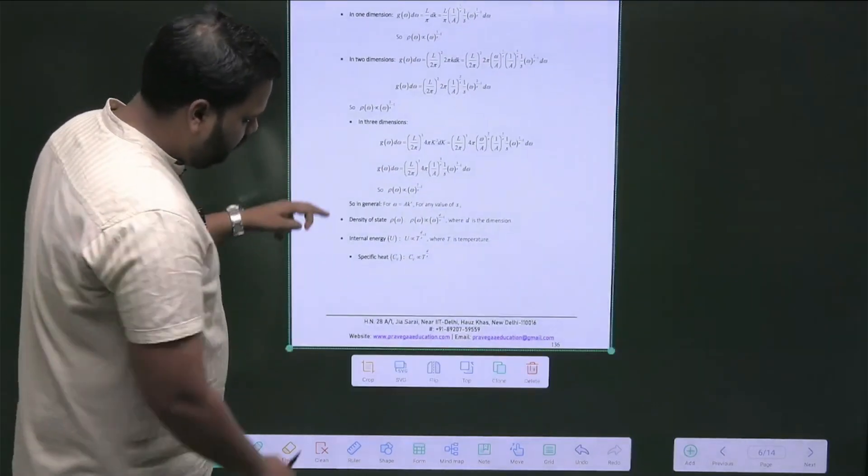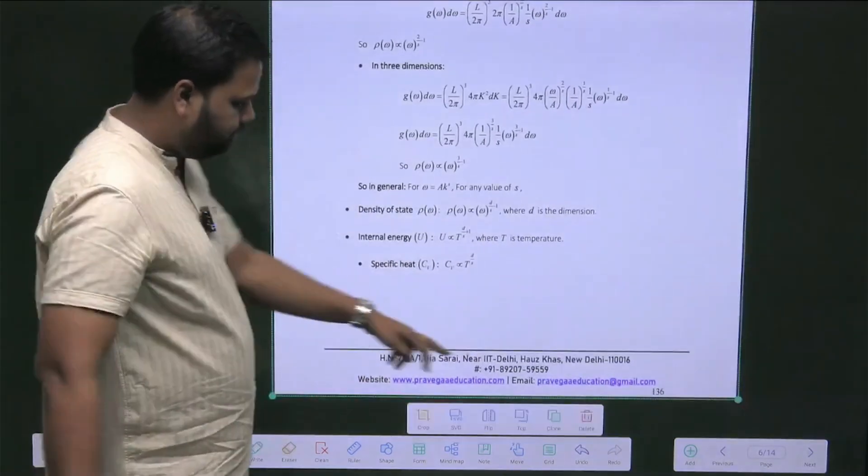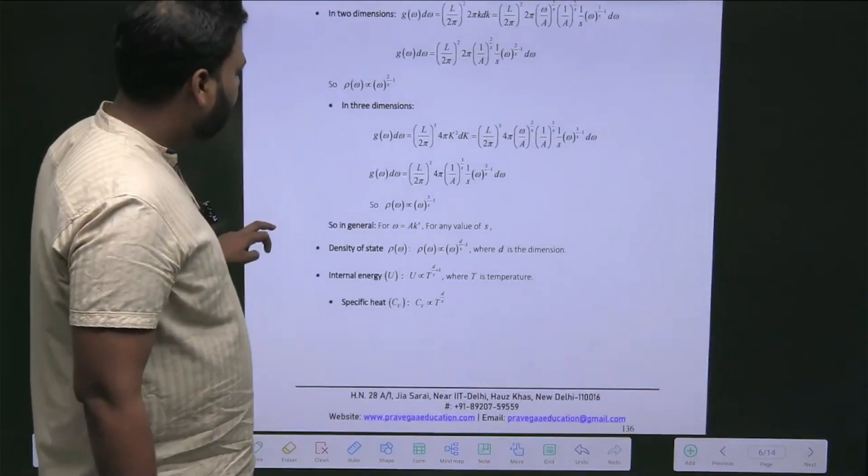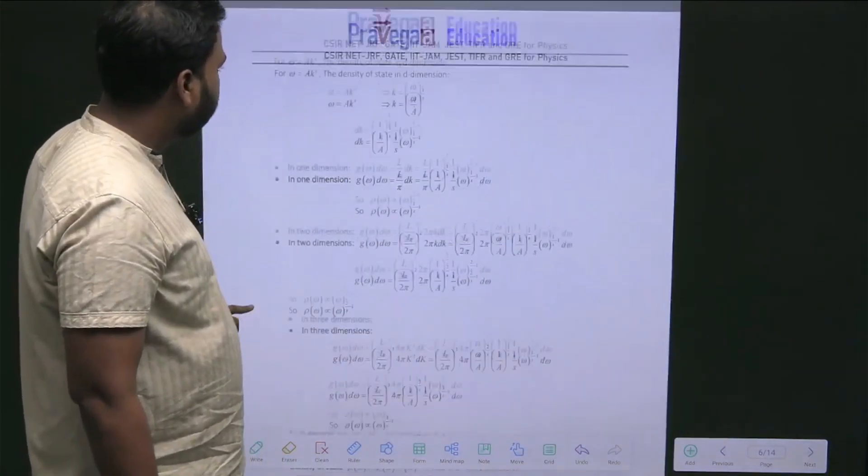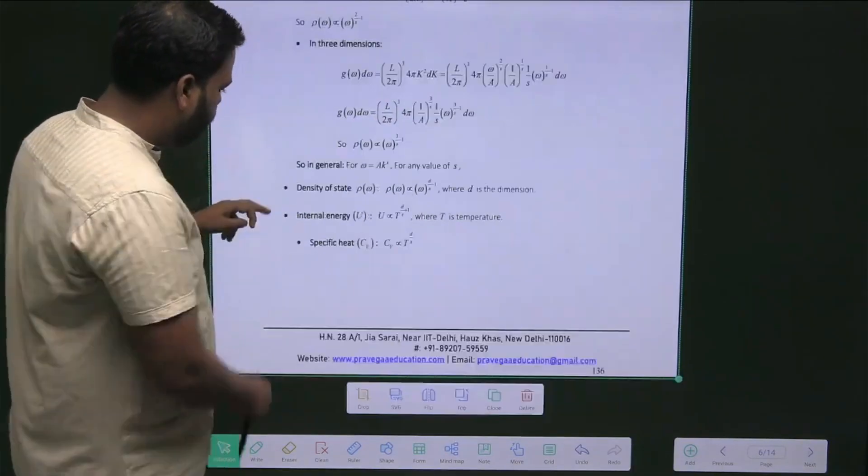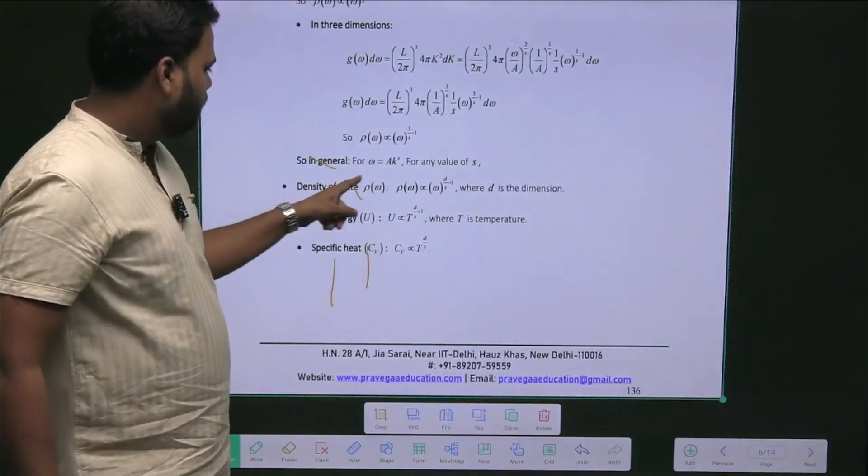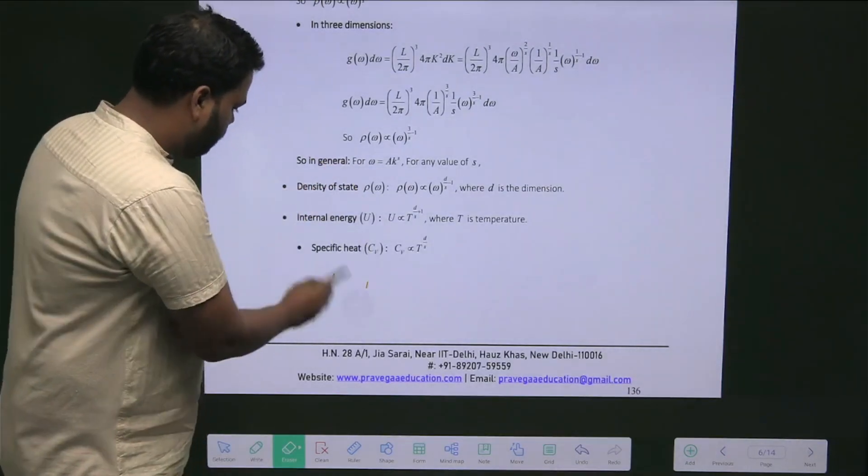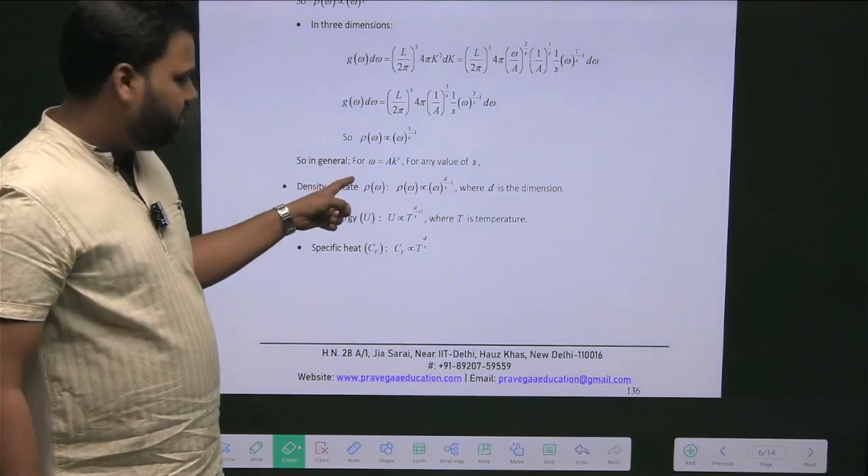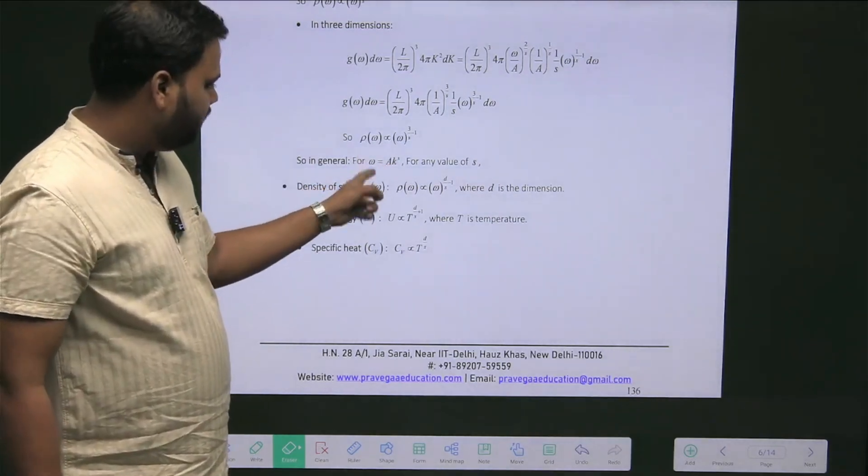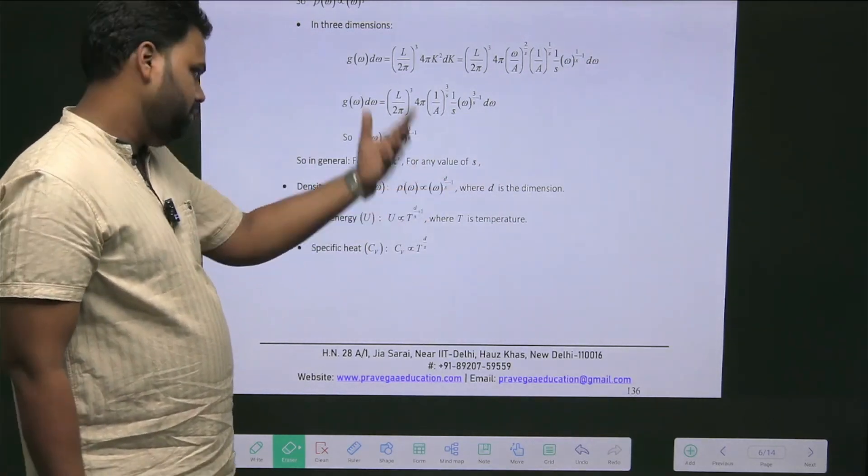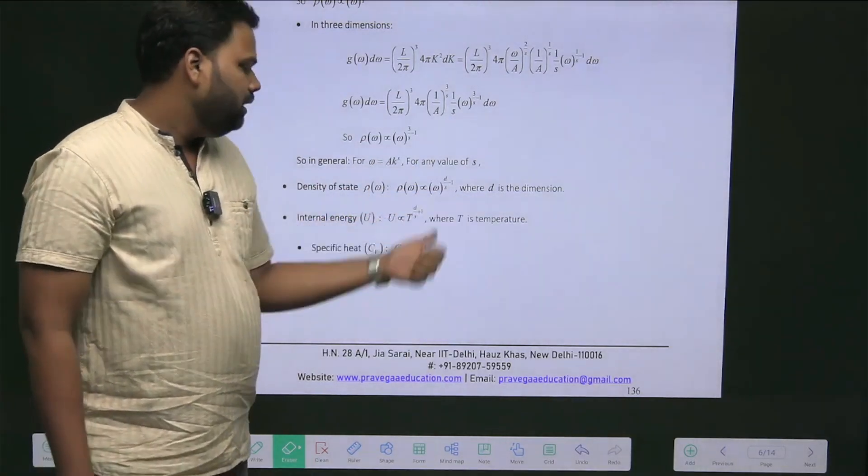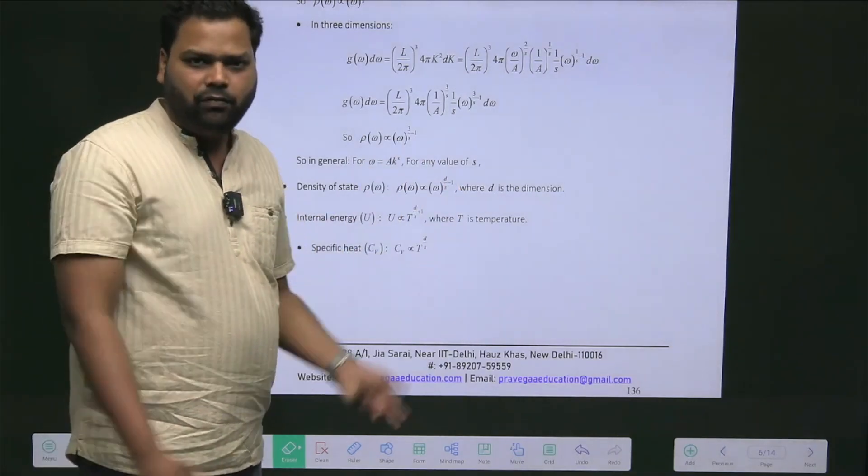If you see page number 136 of the Pravega education booklet, look in the downward portion. In general, if Ω is equal to aK to the power s where s could be any value, then the density of states is proportional to (d/s - 1). You can take this in the form of energy also, not a big deal.